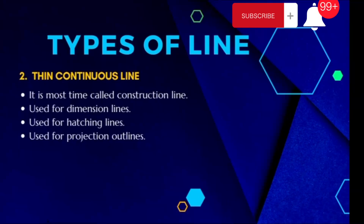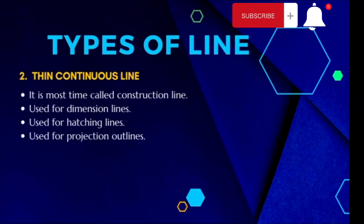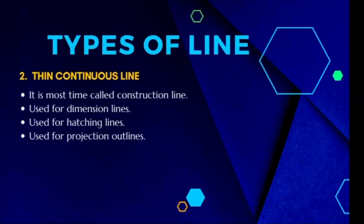The next one is the thin continuous line, most commonly called the construction line. It is used for dimension lines and for hatching lines — whereby when you cut through a plane, we make use of thin continuous lines to show hatching lines.